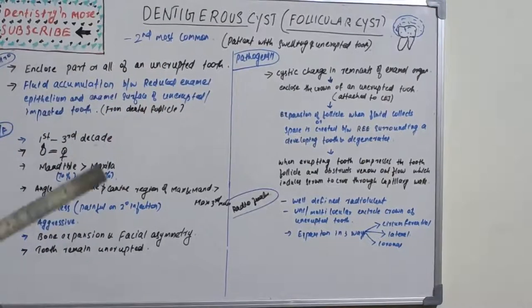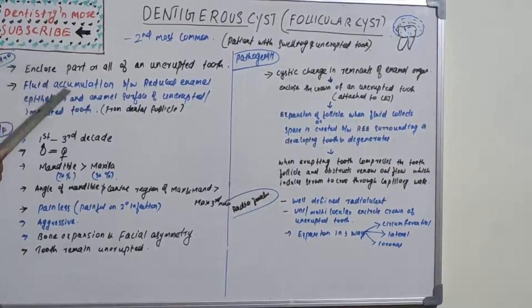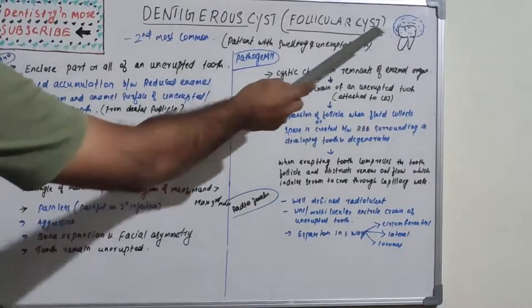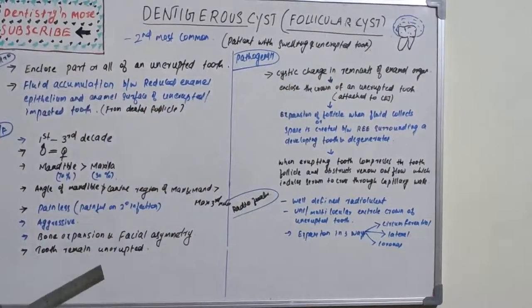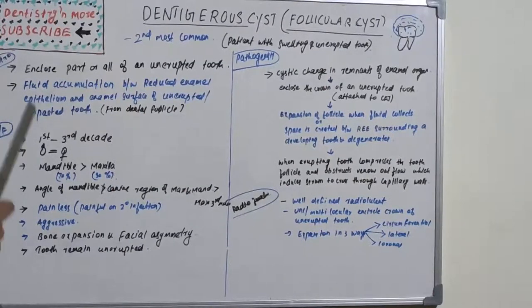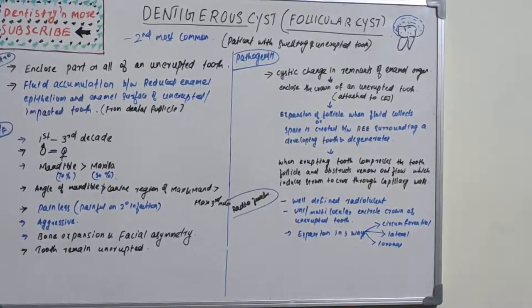There is enclosure of part or all of the unerupted tooth in dentigerous cyst. A part or whole of the tooth is enclosed by the cyst. There is fluid accumulation between the reduced enamel epithelium and the enamel surface of unerupted or impacted tooth.